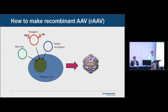To make recombinant AAV, you provide all the separated elements in the same cell in trans: the helper virus genes, the transgene flanked by the AAV ITRs, and REP and CAP. If you put all of those into a producer cell, you'll end up getting out your recombinant capsid with the foreign gene inside it.